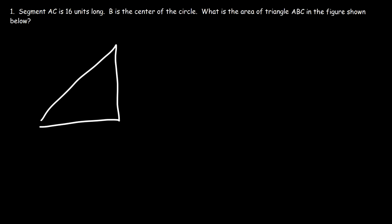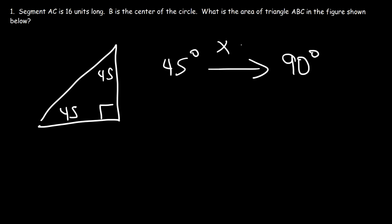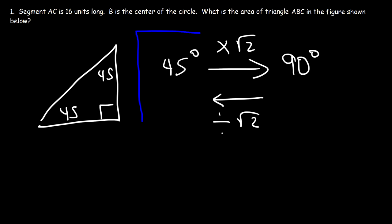You may want to check out my next video on 30-60-90 special right triangles, which also includes problems helpful for the SAT and ACT math sections. Remember: whenever you have a 45-45-90 triangle, if you have the side across the 45-degree angle and want the hypotenuse, multiply by √2. If you have the hypotenuse and want the legs, divide by √2. Knowing this mentally can save you a lot of time on the SAT exam.